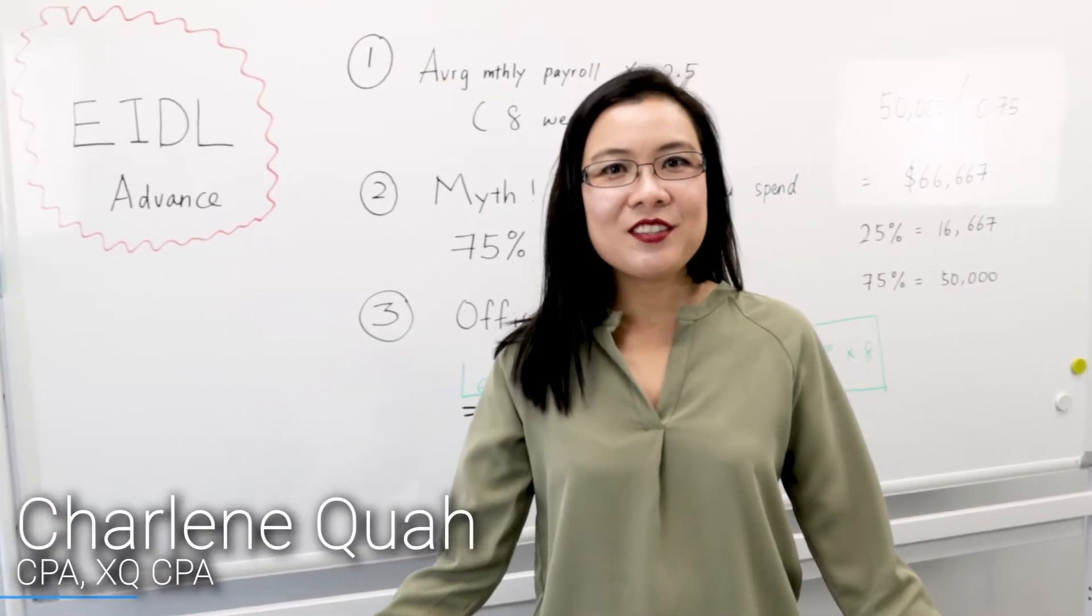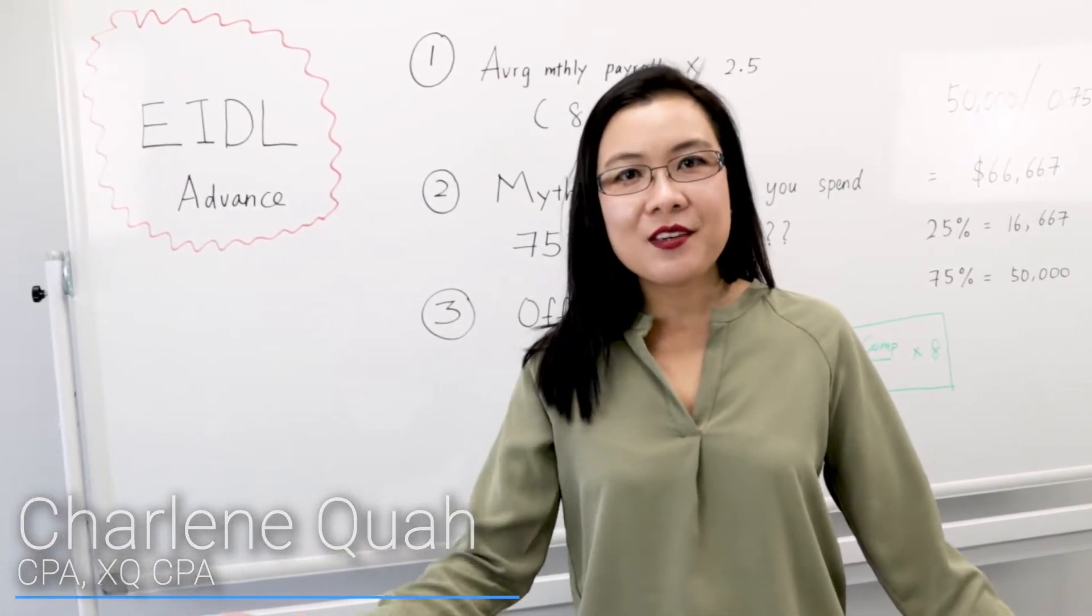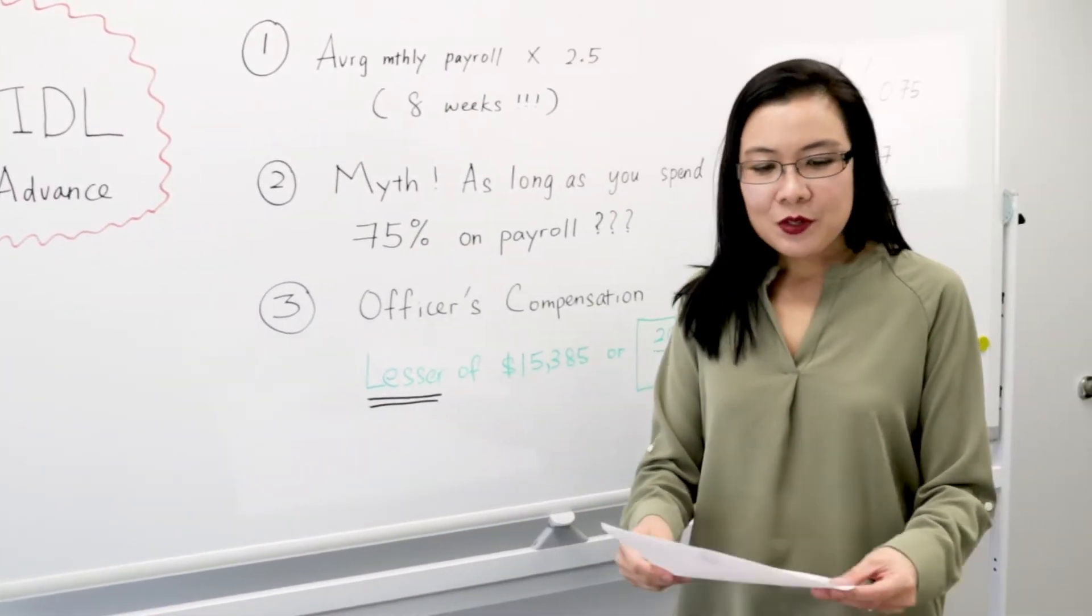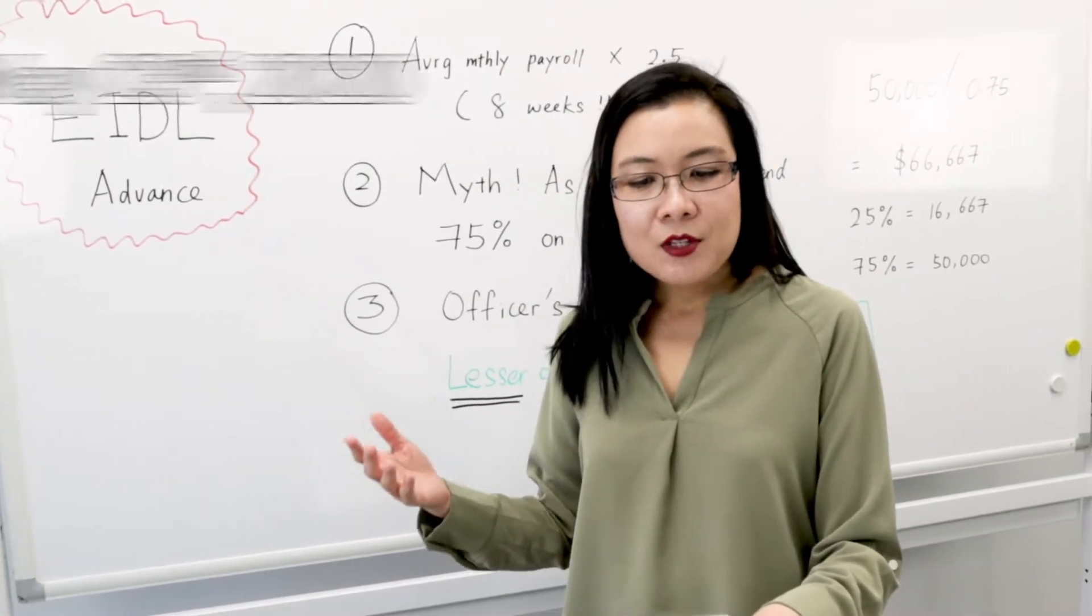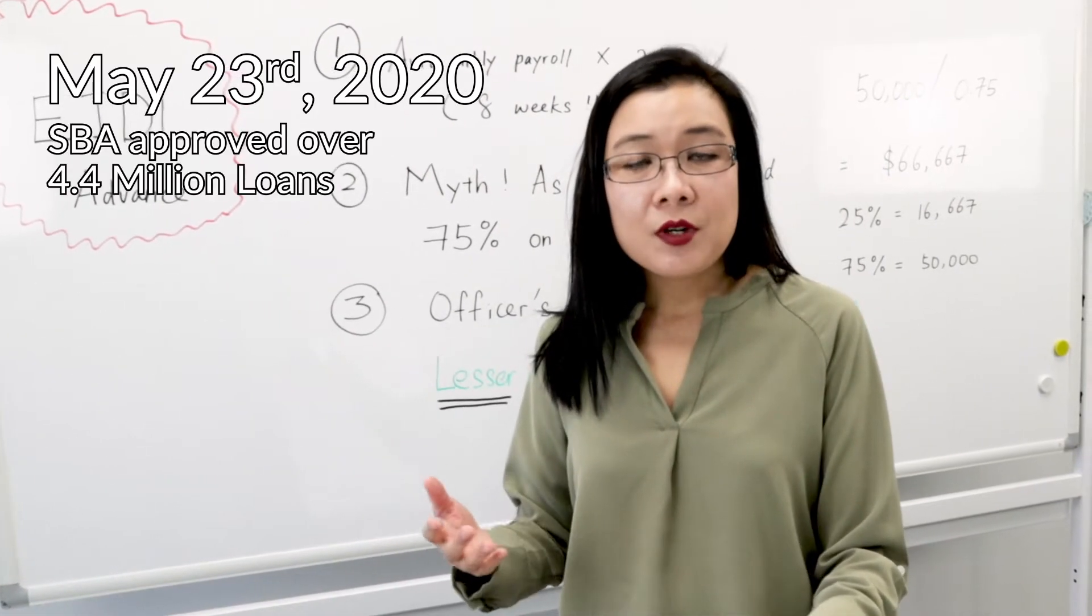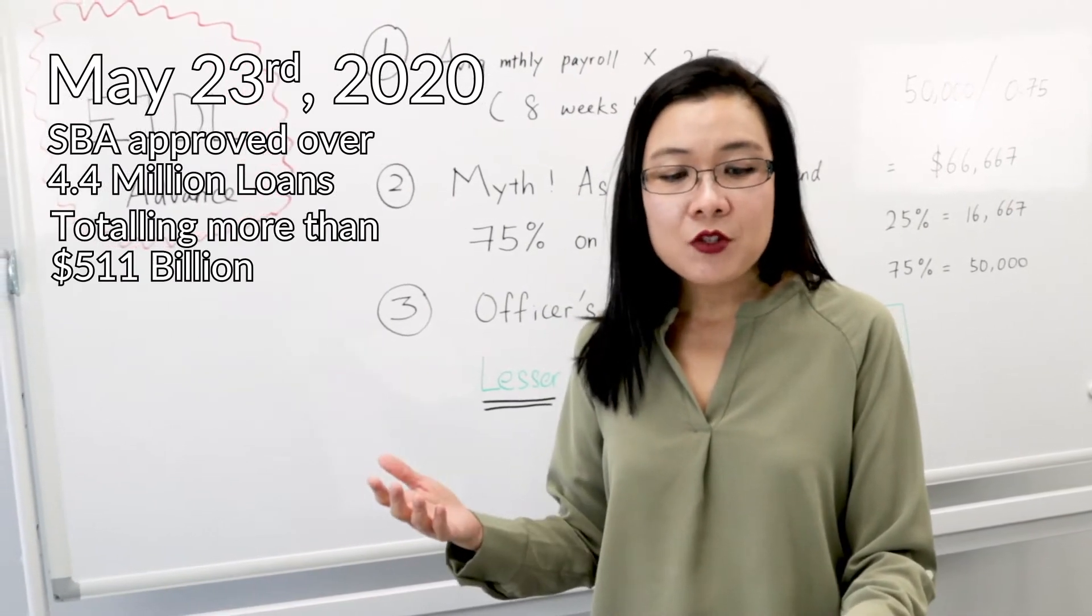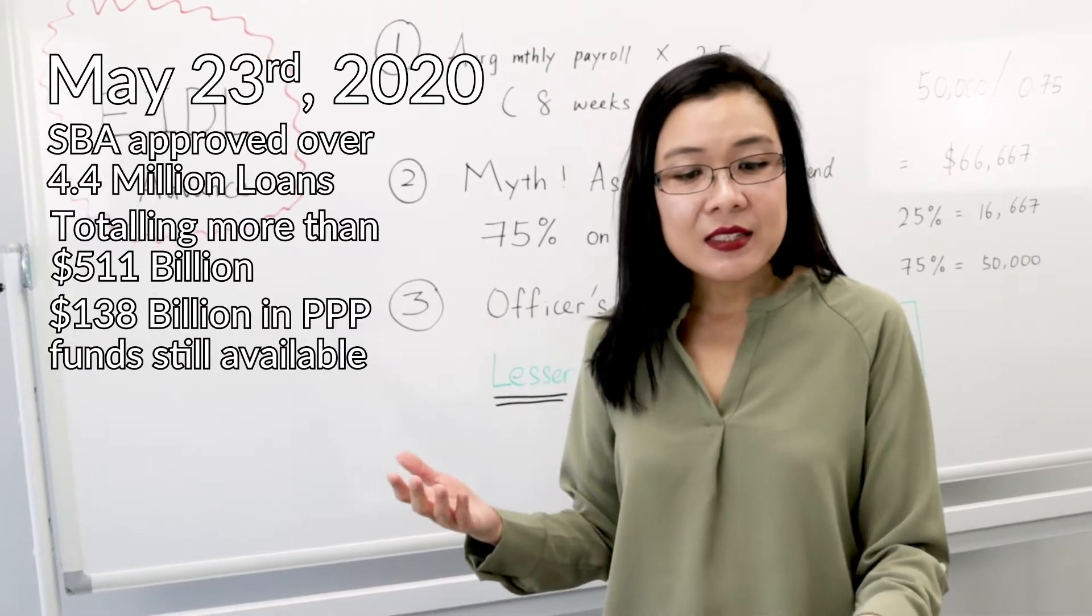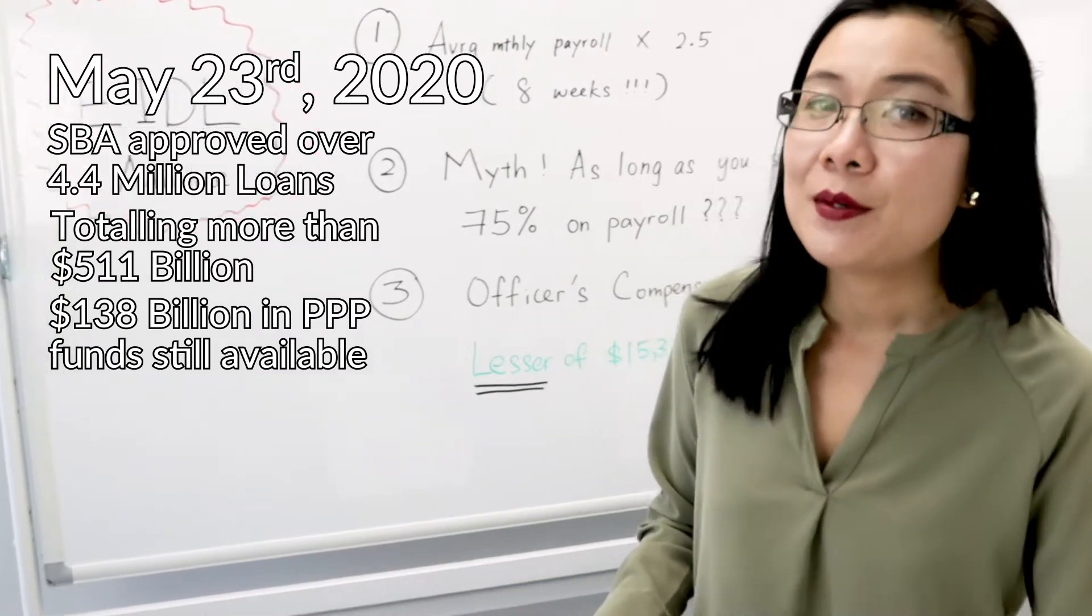Welcome to XUCPA channel, this is Charlene. Today we want to share with you why we think PPP is not PPP anymore. Through May 23rd, SBA approved more than 4.4 million PPP loans totaling more than $511 billion. About $138 billion in PPP funds remain available.